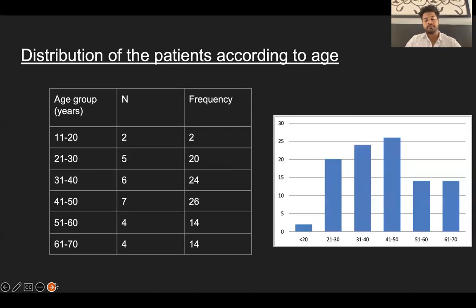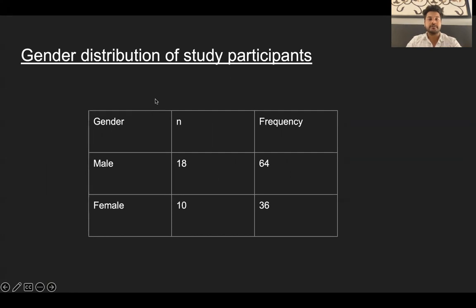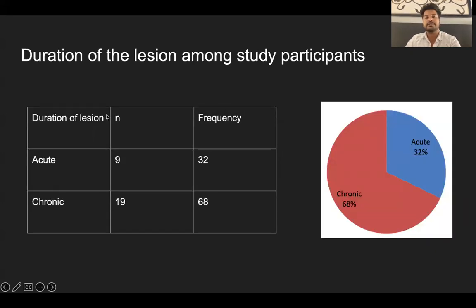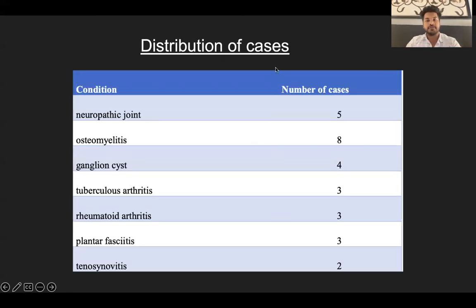Coming to the results of the study, the age group most involved was 41 to 50 years, followed by the 31 to 40 age group. Gender distribution showed the condition was more frequent in males compared to females. Regarding duration of the lesion, most participants had chronic symptoms compared to acute. The distribution of actual cases showed the highest number was osteomyelitis, followed by neuropathic joint, ganglion cyst, tuberculosis, rheumatoid arthritis, and plantar fasciitis.